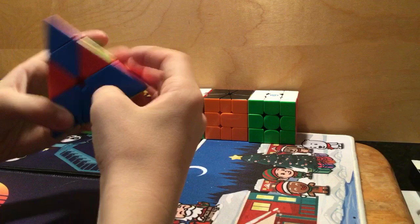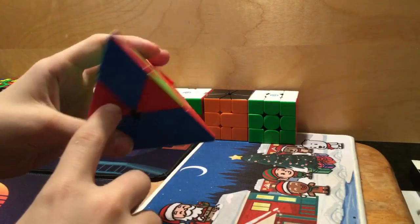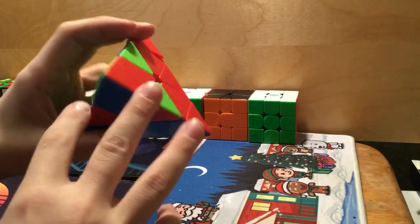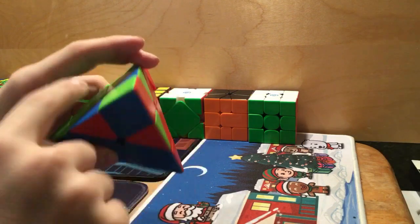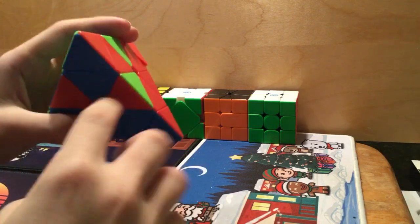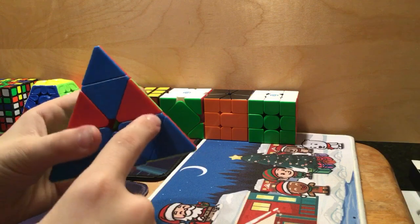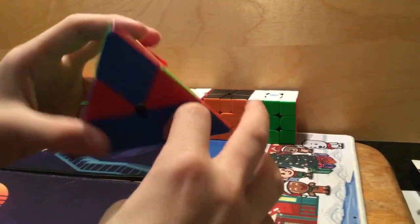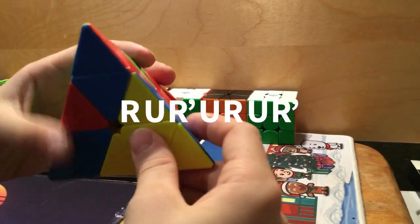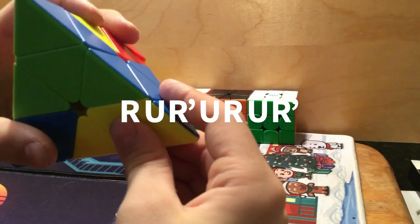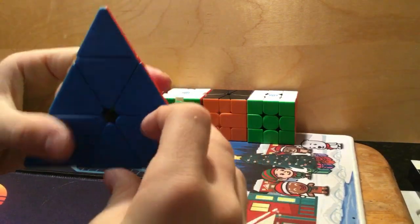And then there will be another case where these edges need to flip over to there, and these need to go there, and those to there. This will be the counterclockwise edge case. And the way you solve that is by going like this.